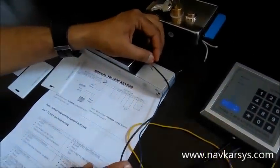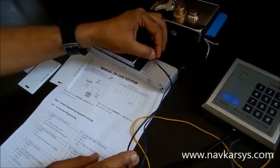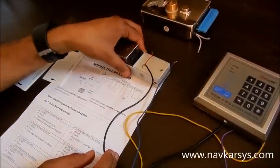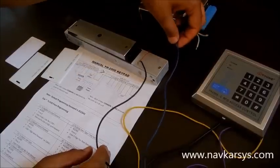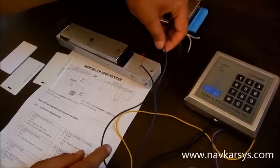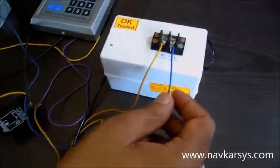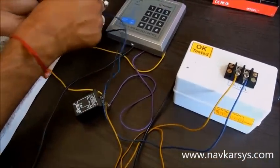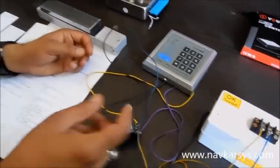The power supply positive is connected to the positive part of the electromagnetic lock. The negative part of the electromagnetic lock can be connected either way. You can connect positive or negative, you can change it anyway. This is very simple.